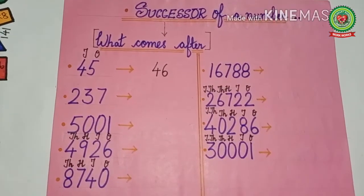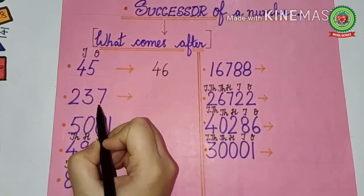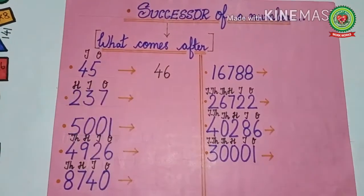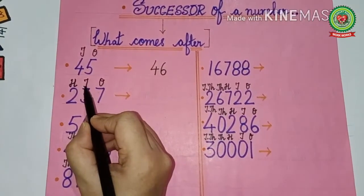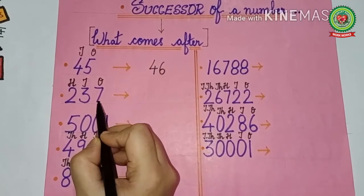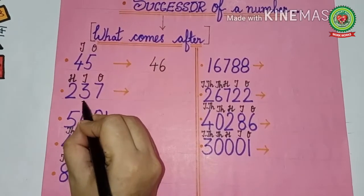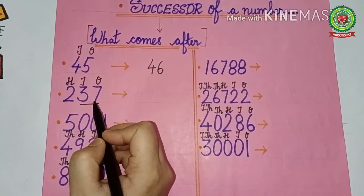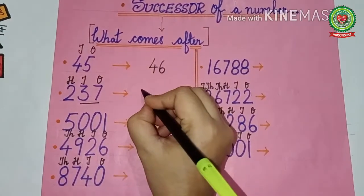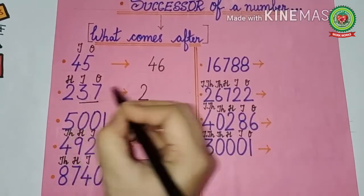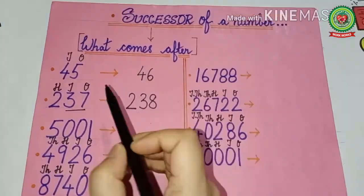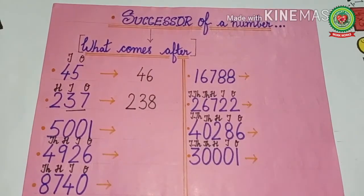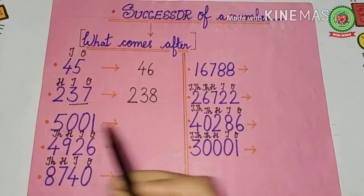Now look at the next number: 237. First, we write the place value table — ones, tens, hundreds. Ones and tens go together, so we read them together: 37. What comes after 37? We know that after 37 comes 38. So the hundreds place remains the same — that is 2 — and 37 becomes 38. So the successor of 237 is 238.